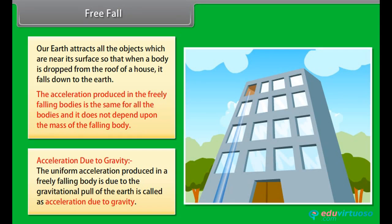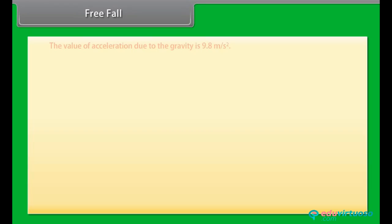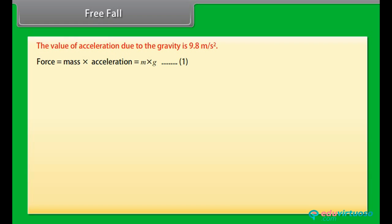Acceleration due to gravity: the uniform acceleration produced in a freely falling body due to the gravitational pull of the earth is called acceleration due to gravity. The value of acceleration due to gravity is 9.8 meter per second squared. Force is equal to mass times acceleration, which is equal to M times g — equation 1.